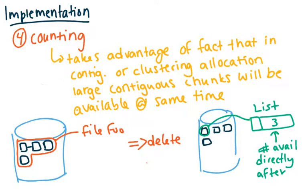The last thing that I want to talk about is counting. This takes advantage of the fact that in contiguous or clustered allocation, large chunks of contiguous memory will become available at the same time, right? So if here, this file is occupying these four locations, when that file is closed or deleted, all of that's going to become available all at once. So in fact, those contiguous chunks will all be available.